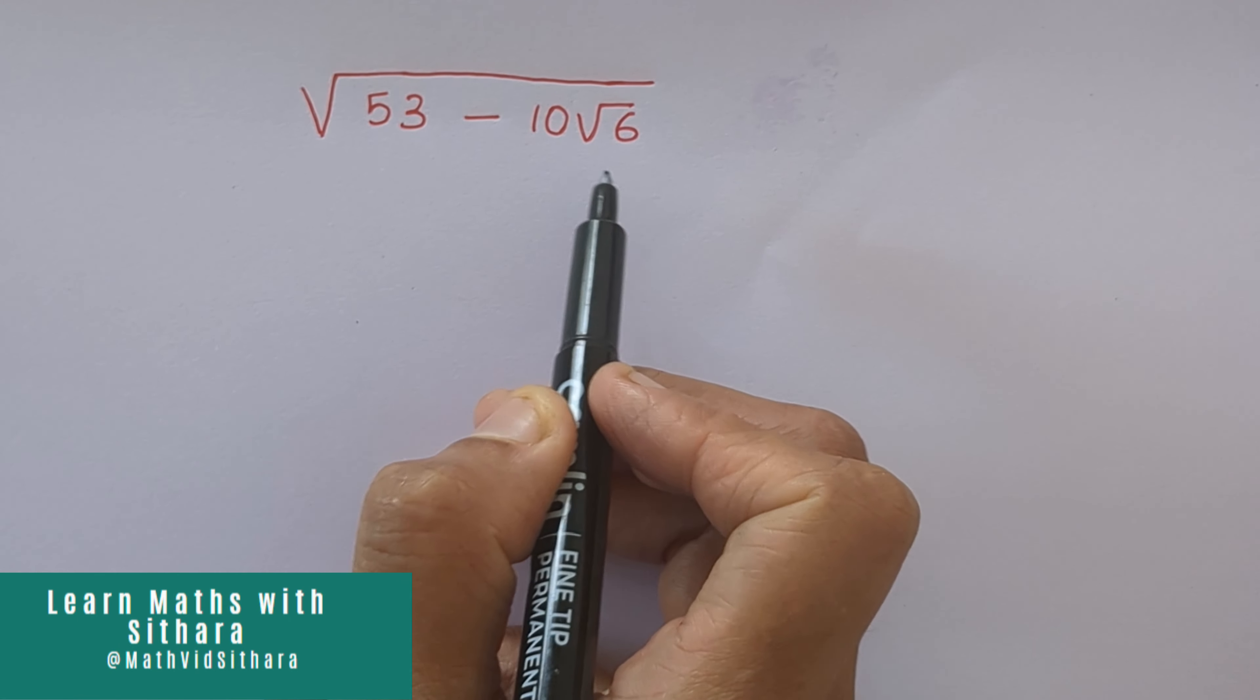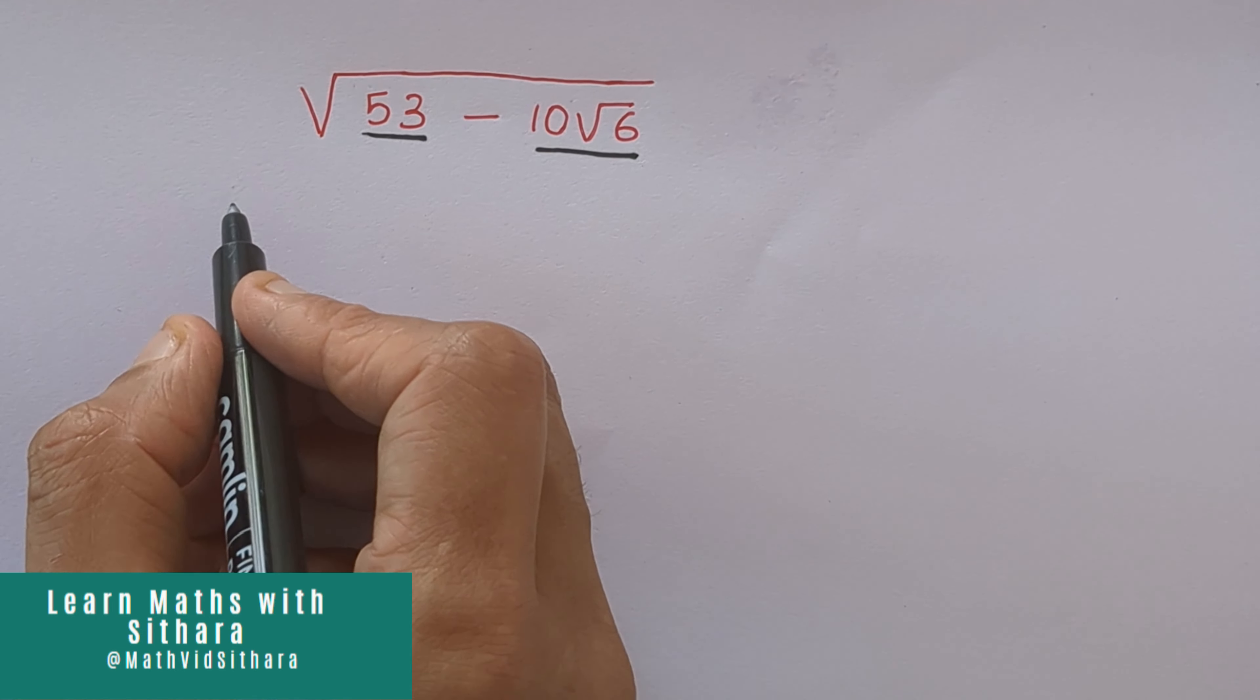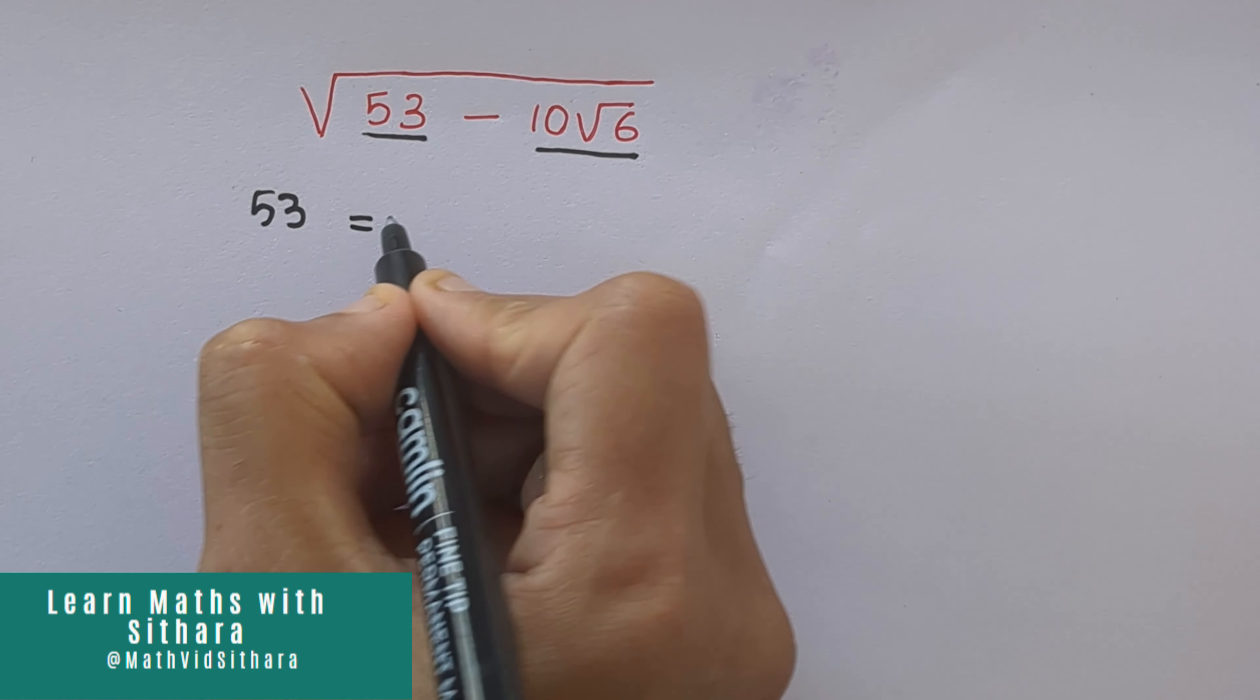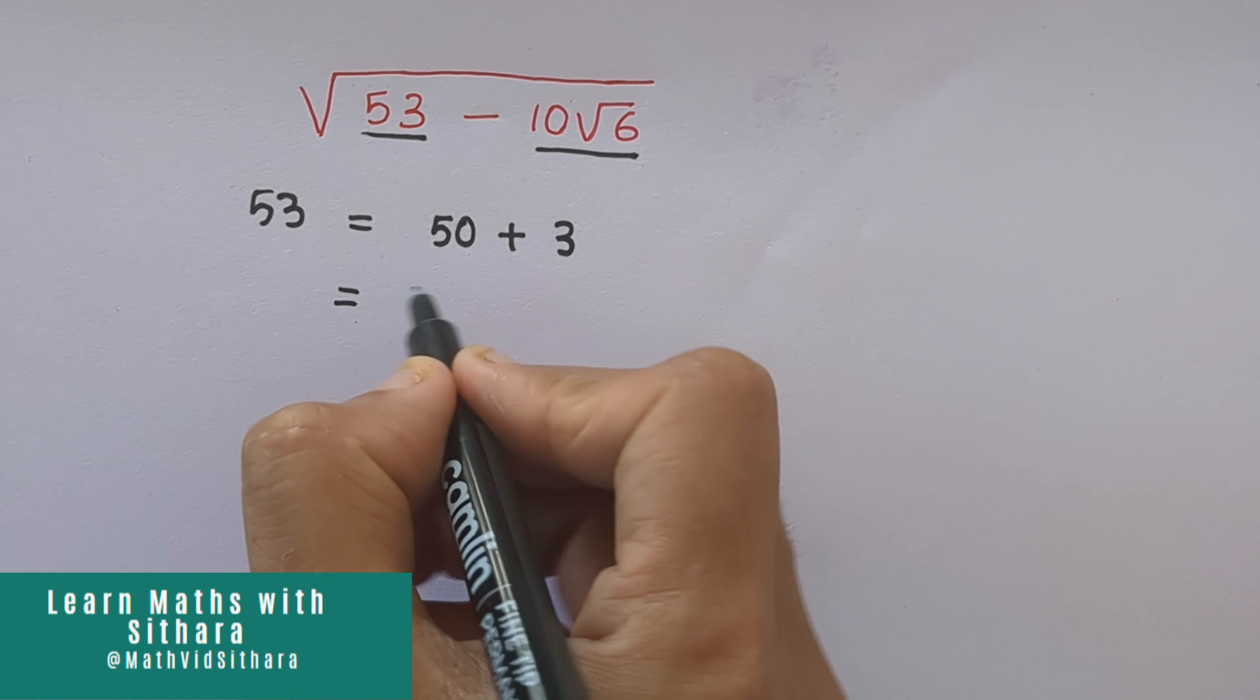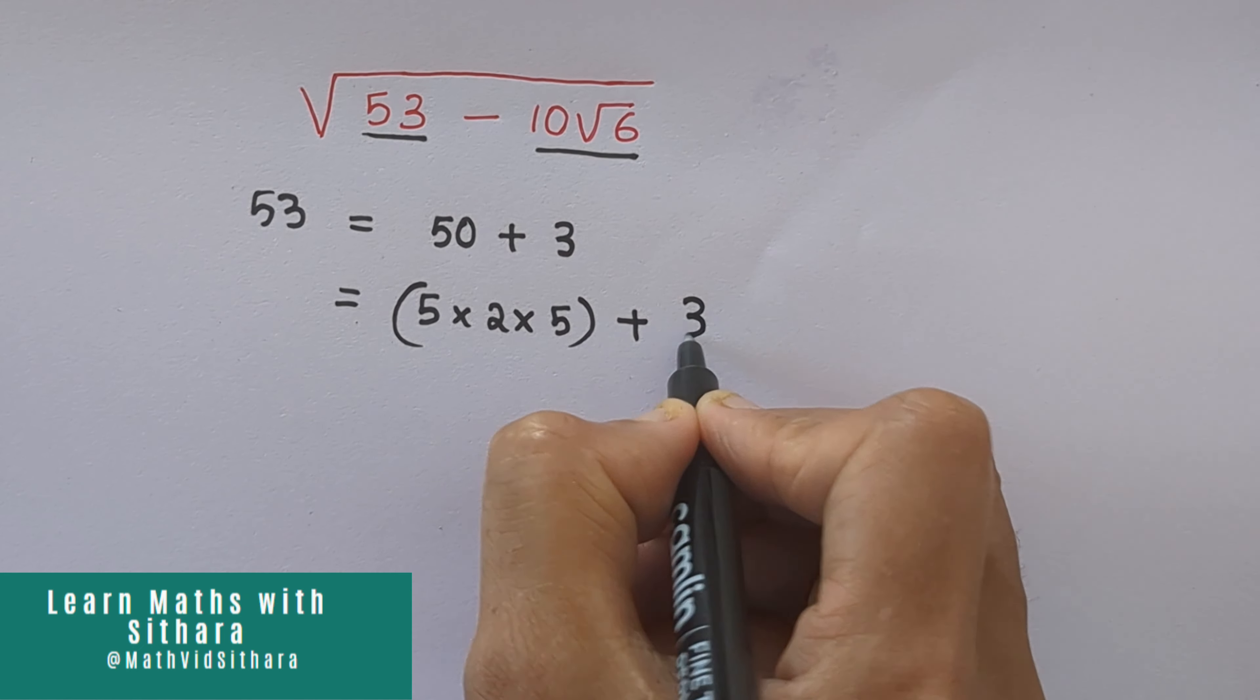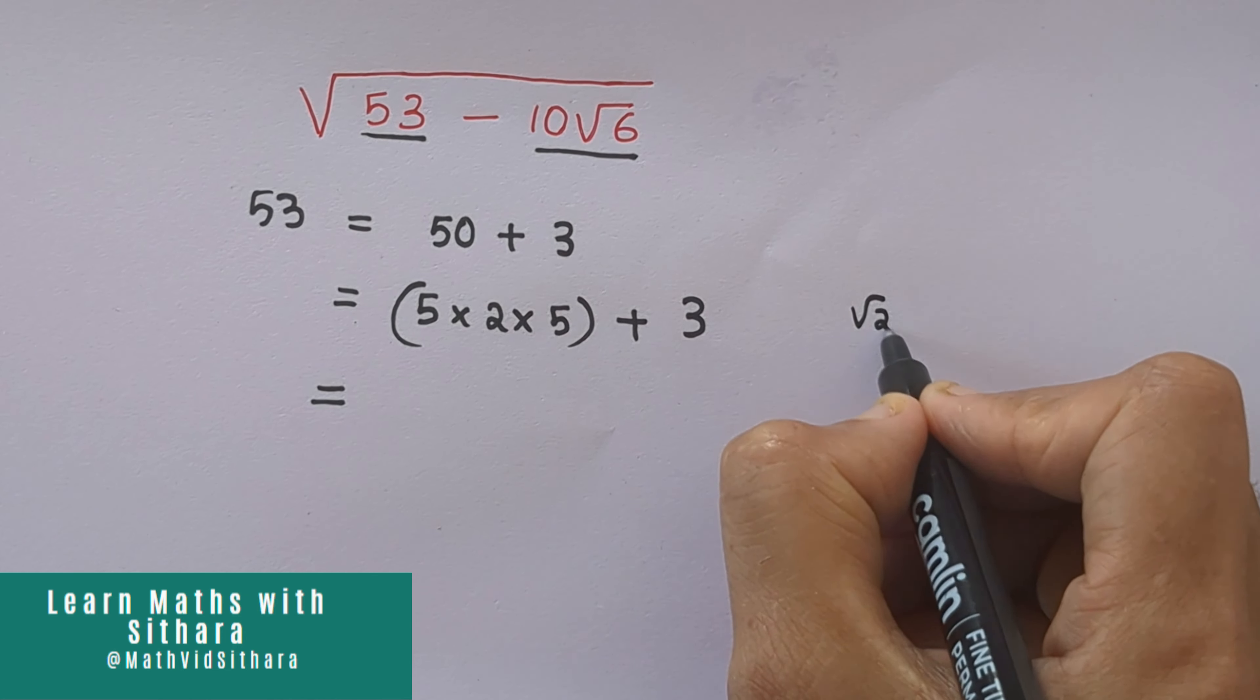Hello everyone, let's solve this question: the square root of 53 minus 10 root 6. First of all, we can take one term at a time. That is 53 equals 50 plus 3. That is 50 equals 5 into 2 into 5 plus 3.